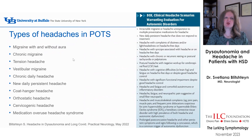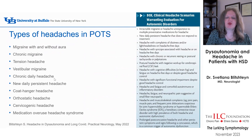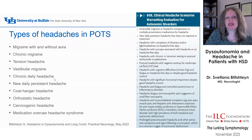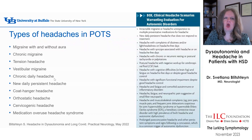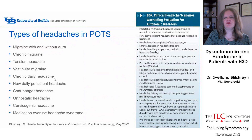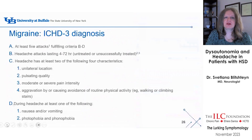Various headache types occur in patients with POTS: migraine with and without aura, chronic migraine, tension headaches, and vestibular migraine, which is quite prevalent. Chronic daily headache, new daily persistent headache, and coat hanger headache — which occurs because blood is pooling and affects muscles, joints, and ligaments in the back of the head, neck, and shoulders. Orthostatic headaches should point toward investigation for CSF leak. Cervicogenic headache and medication overuse headache syndrome are also common.